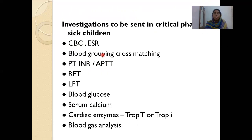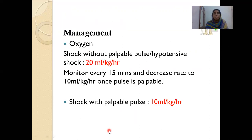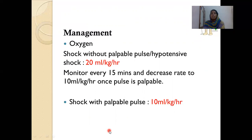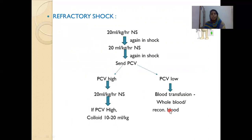Investigations to send: CBC, ESR, blood grouping, PT/INR, renal function test, liver function test, blood glucose, calcium, troponin, blood gas analysis, etc. Management: immediately start oxygen by non-rebreathing mask. If the child has hypotensive shock or absent peripheral pulse, start at 20 mL per kg per hour. Monitor every 15 minutes — once BP starts picking up and pulse becomes palpable, decrease fluids to 10 mL per kg per hour. Shock without palpable pulse: 20 mL/kg/hr; shock with palpable but narrow pulse: 10 mL/kg/hr.